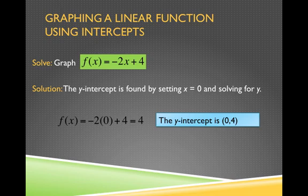And as you can see, I easily get 4, which we should already be able to look at this f(x) equals negative 2x plus 4 and say, hey, Angie, of course the y-intercept is 4. It's in the position of b.